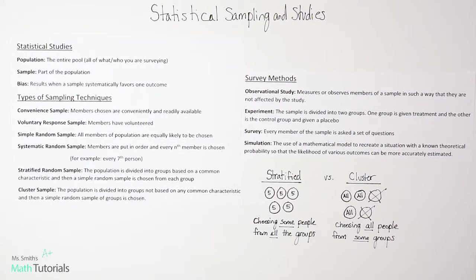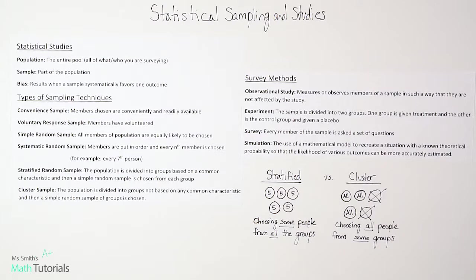Simple random samples are when all members of the population are equally likely to be chosen — that's a true random sampling. Systematic random sample is when members are put in order and then every nth member is chosen. For example, you line everybody up in order and then specifically choose every 7th or every 20th person as your members.